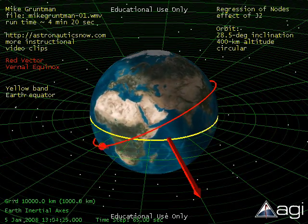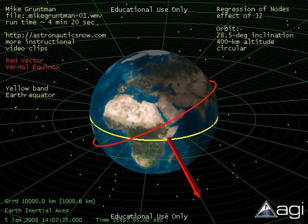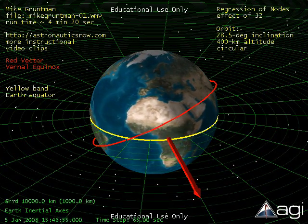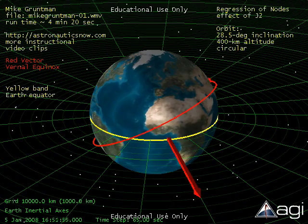As you can see from our simulation of regression of nodes, by the end of the fifth day, the line of nodes has precessed more than 35 degrees.